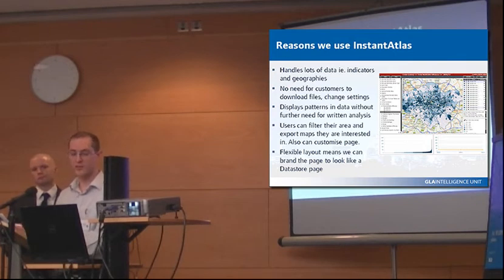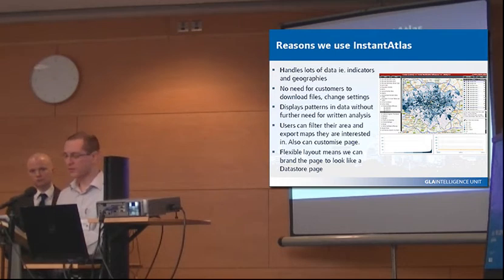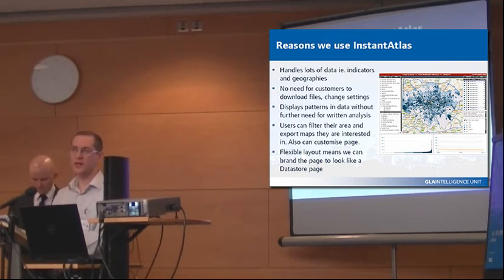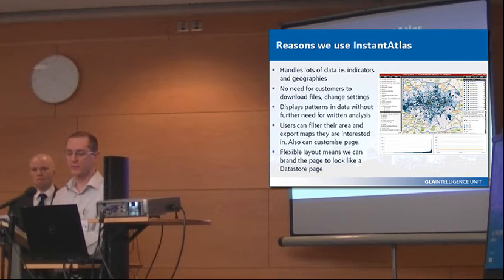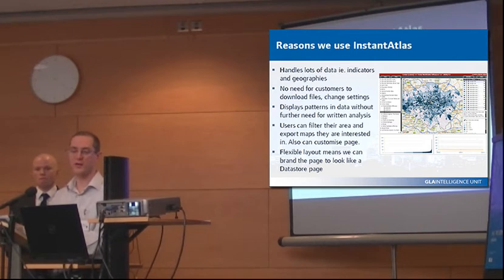We always have a filter, especially on the small area data, so people can zoom to their own borough level. And on these, people can use the Google Maps background, which is really important — particularly with small areas, people don't really know which MSOA area they're looking for, so finding a train station or landmark matters. We don't tend to put the Google background on the borough map because people know which borough they're looking for. Also, if you've got a Google Map on, you can't export to a JPEG. So we sometimes have to do two versions — one with the Google Maps background and one without — just for that reason.